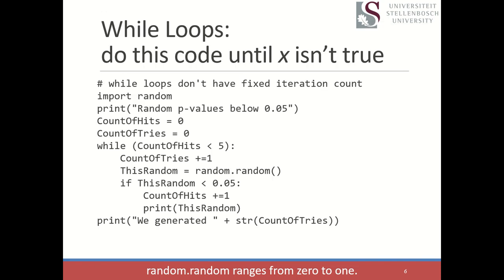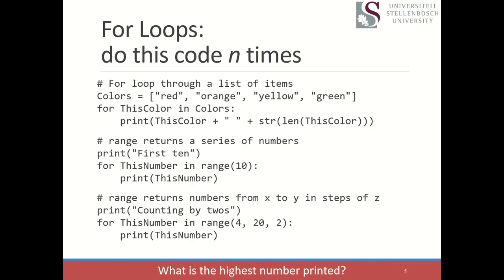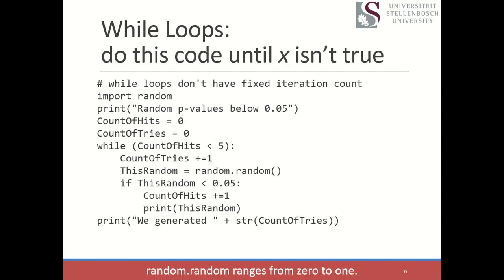We've now walked through methods and functions, conditional execution with if, elif, and else, for loops where we run code once for each item in a set, and while loops where we run until some condition has been met. These features show up in almost every programming language, so even if you never use Python again, these concepts apply whether you go to Java, C#, or C++. Thank you very much for sitting in today.